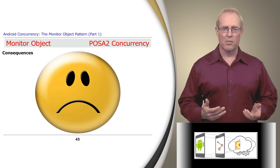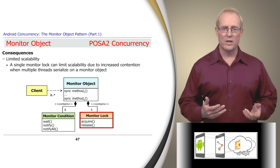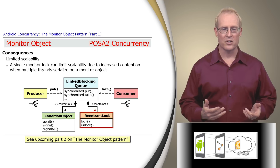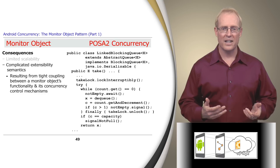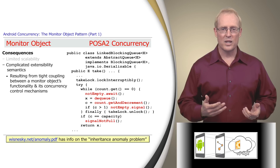There are also several drawbacks to the monitor object pattern. One drawback occurs when a single monitor lock is used per monitor object, which limits scalability due to increased contention when multiple threads serialize on that single lock. The LinkedBlockingQueue class shows one way to improve scalability by defining multiple monitor locks, as examined further in the next part of this module. Another drawback involves complicated extensibility semantics resulting from tight coupling between a monitor object's functionality and its concurrency control mechanisms, making it hard to change synchronization and scheduling policies without modifying the monitor object's method implementations. This link contains more discussion of the Inheritance Anomaly problem related to this drawback.